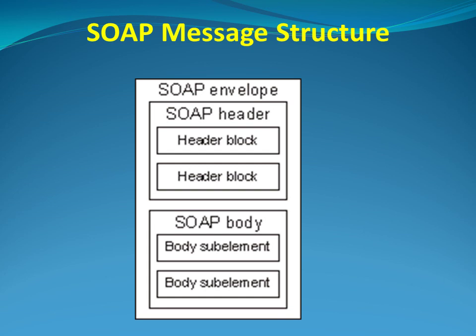A SOAP message is encoded as an XML document. It has an envelope element which contains an optional header and a mandatory body. The fault element in the body is used for reporting errors. Every SOAP message has the SOAP envelope that is the root element. It has two child elements: an optional header and a mandatory body. The SOAP header is an optional sub-element of the SOAP envelope. It passes application related information for processing by SOAP nodes along the message path.